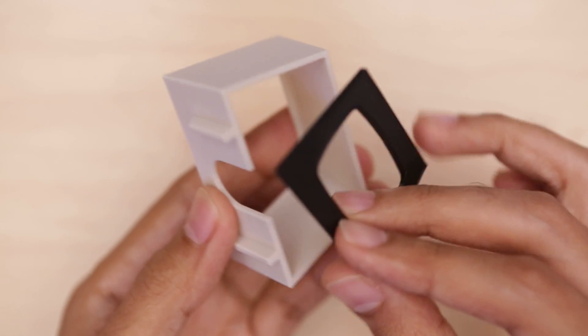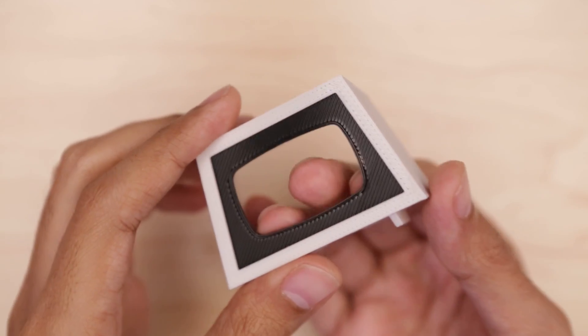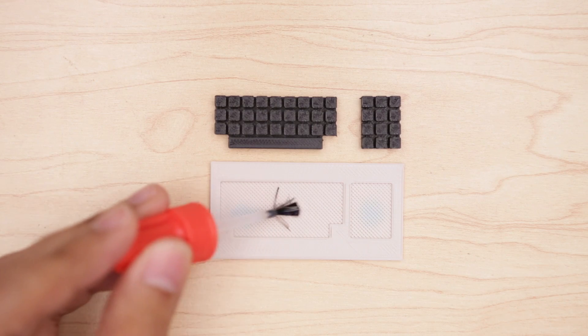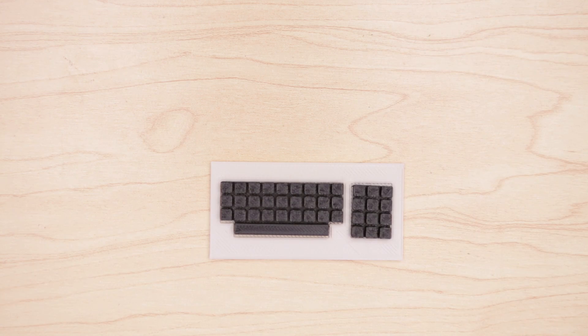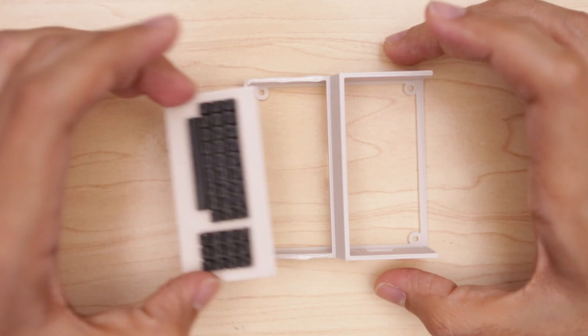Onto the assembly we can start by installing the faceplate into the display frame. A dab of super glue can permanently bond the keypad to the keyboard cover. Then attach the keyboard cover to the frame of the enclosure.